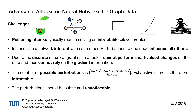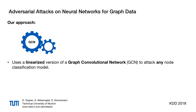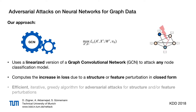The number of possible perturbations is so large that an exhaustive search is intractable. As seen in the image scenario, the perturbations to the data should be unnoticeable. Our approach uses a linearized version of a graph convolutional network to attack any node classification model. We've developed a way to compute the change in loss due to a perturbation in closed form. Even better, we propose an efficient, iterative and greedy algorithm for adversarial attacks on neural networks for graph data.